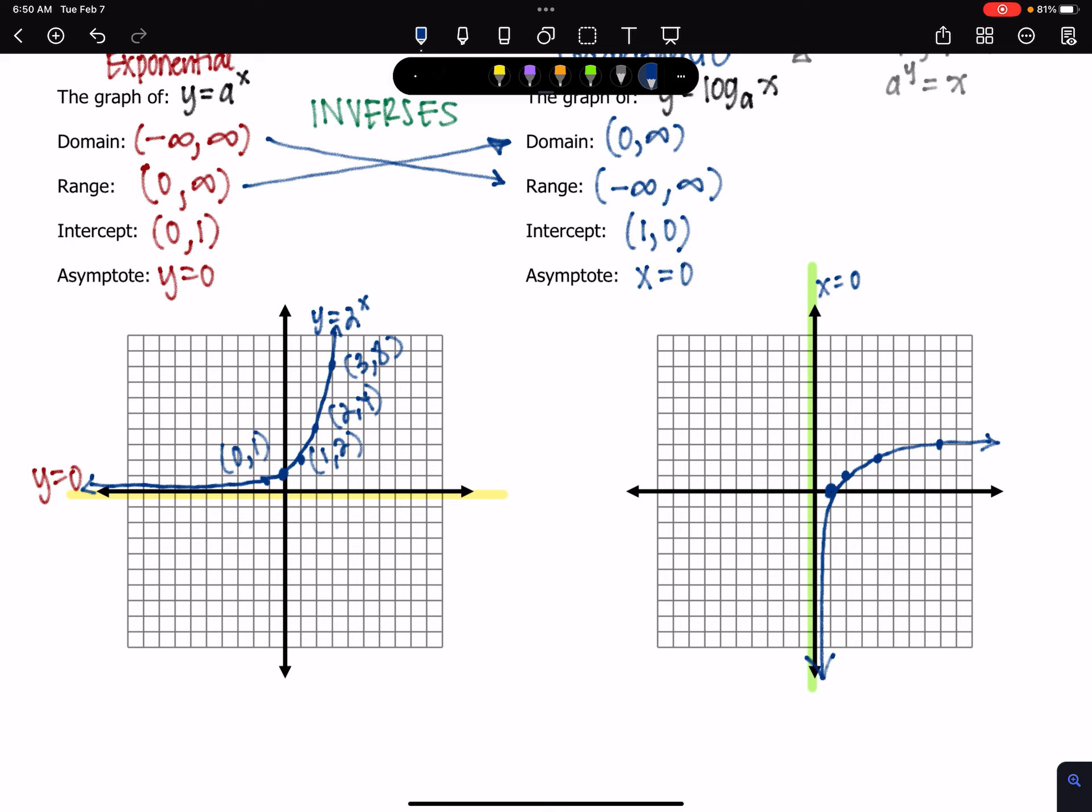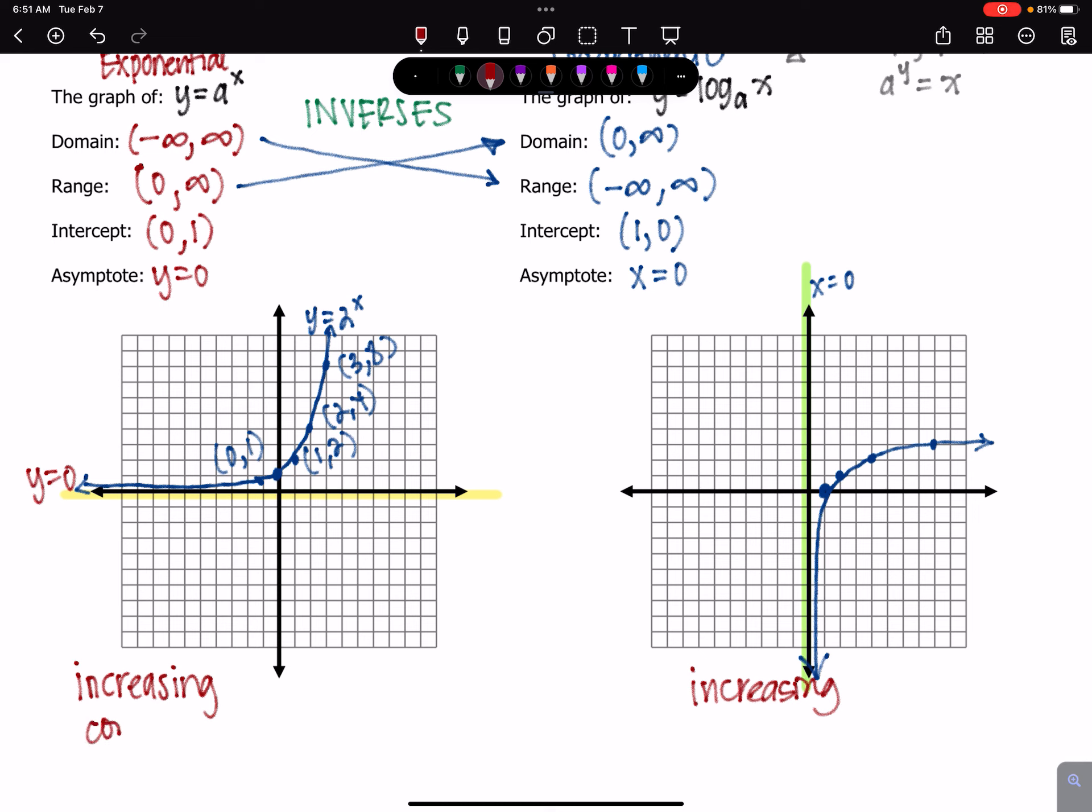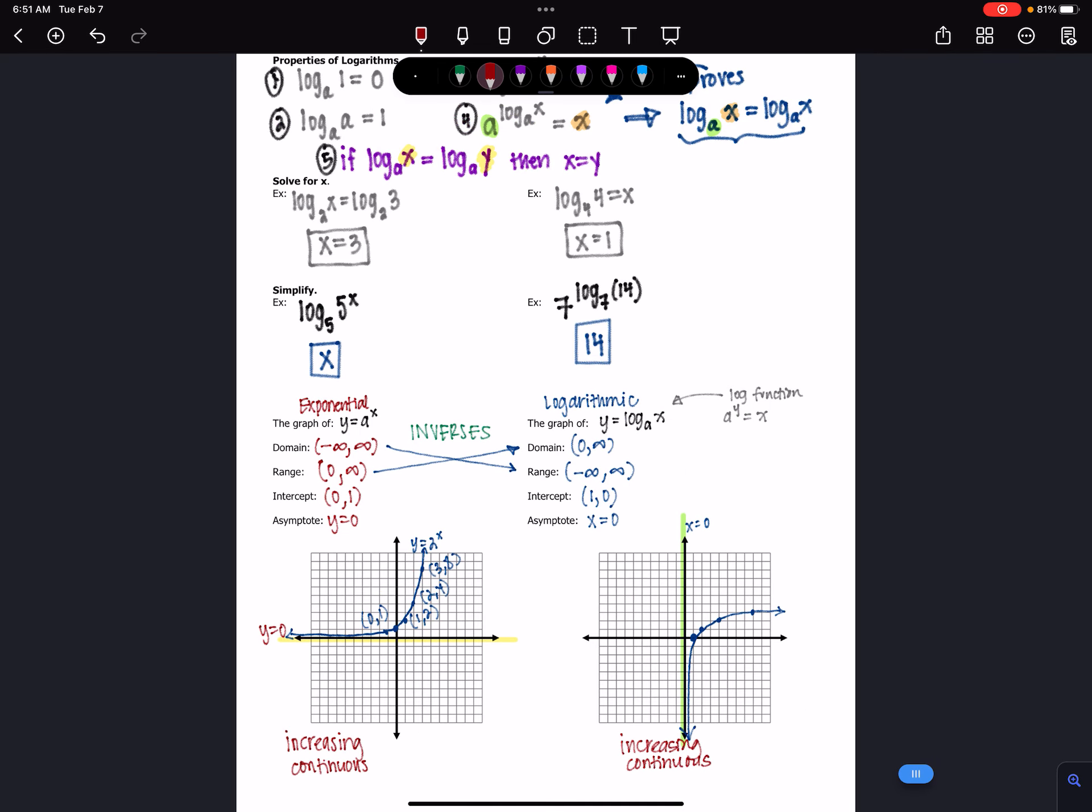The function on the left, which is an exponential function, is increasing, as is the logarithmic function. It's increasing because as x gets bigger, y is also getting bigger. So as x increases, y increases. Now, in two very different ways, because as x increases, y increases very, very quickly on the exponential function. However, as x increases on the log function, it starts to not increase as much, but it is still increasing. And then, of course, both of these are continuous. So they're both continuous functions. I can draw them without picking up my pencil.